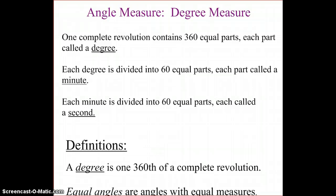In addition, each degree is then divided into 60 equal parts, each part called a minute, and then each minute is divided into 60 equal parts called a second. So the definition of a degree is that it is 1/360th of a complete revolution.